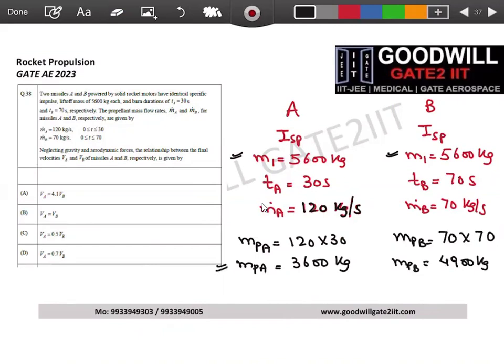You know m1, you know mp, so what is mass 2? You know mass 2 is m1 minus mp right, basic formula. So what is mass 2 for rocket A? 5600 minus 3600, so 2000 kg. Here it will be 5600 minus 4900 which is 700 kg.